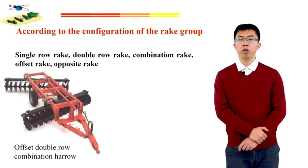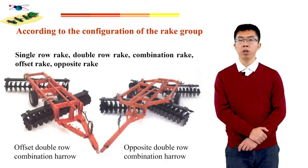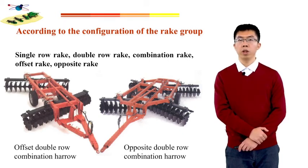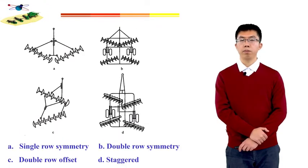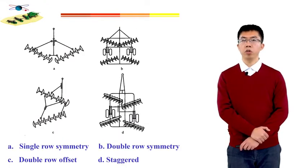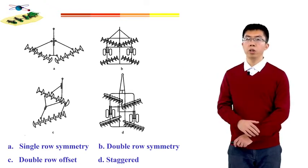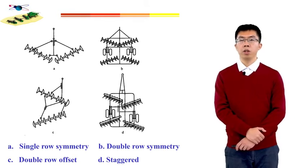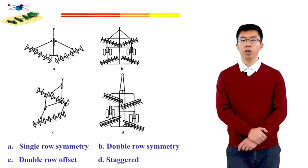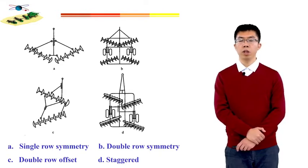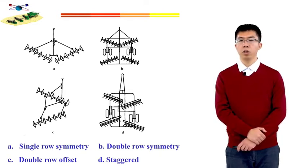According to the configuration of the disc group, the harrow could also be classified into single-row, double-row, combination, and offset configurations. This picture shows four different configurations: figure A shows single-row symmetry, figure B shows double-row symmetry, figure C shows double-row offset, and the last figure shows the staggered configuration.